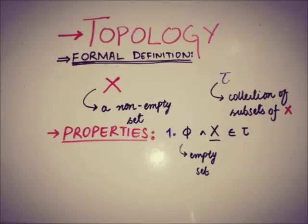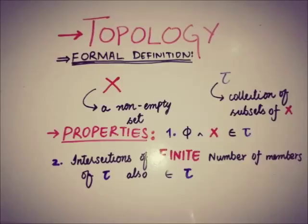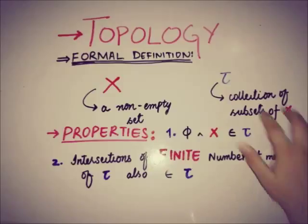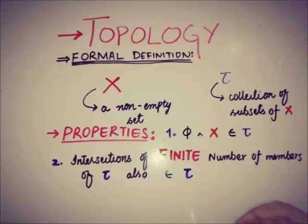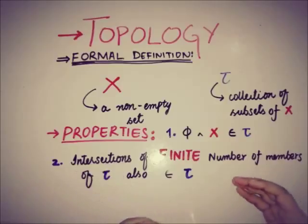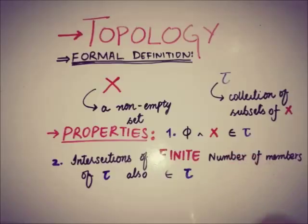The second property tells us that the intersection of a finite number of members of tau — the collection of subsets of X — should also belong to tau. This property does not give us a free hand in choosing any number of members; only a finite number of members from tau may be selected, and then the intersection of such members should also be in tau.